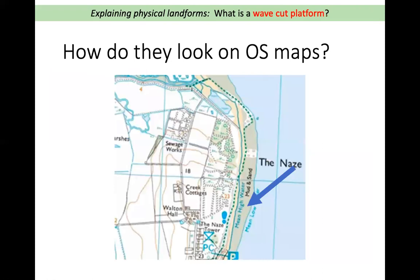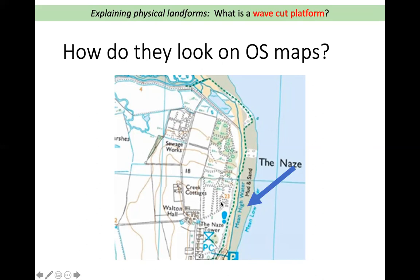How do wave-cut platforms look on OS maps? Here's an example. We can see this area here — it's labelled mud and sand. This is the wave-cut platform. A big clue is that it has two lines showing mean high water and mean low water. Mean high water is the highest point that the water reaches at high tide, so we know that is at the bottom of a cliff. Mean low water is the lowest point that the sea water will reach at low tide, so the platform will be exposed. So we know that this is the wave-cut platform and here is where the cliff starts.